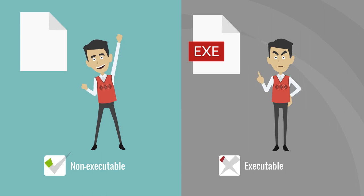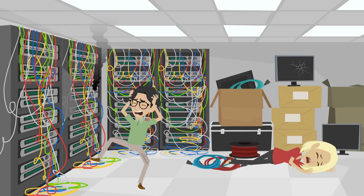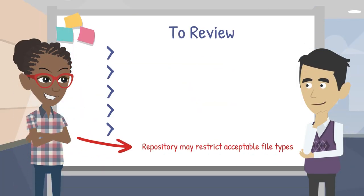Non-executable. Executable data with executable code should not be archived in a digital language archive or institutional repository unless the repository specifically says so, such as in version control repositories like GitHub. Executables could harm the digital repository that is preserving your materials. As always, work with your repository to find out about their file format restrictions.